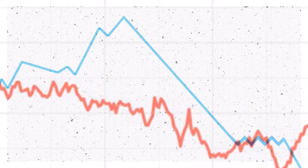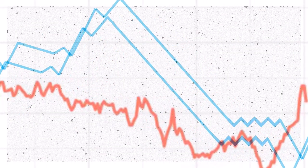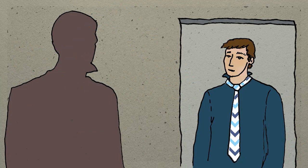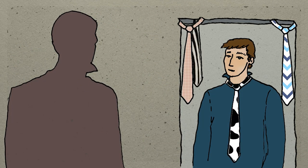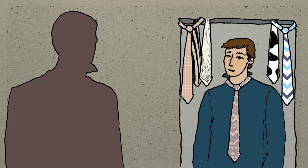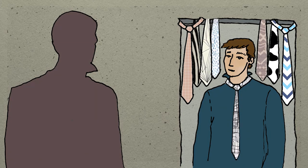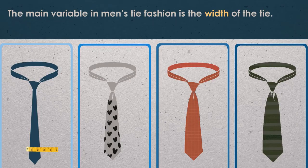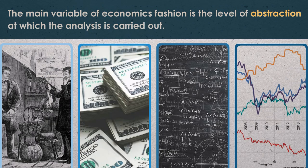To an outsider this may sound strange, but the science of economics behaves like fashion — it changes in cycles. As a man who has had to wear ties professionally, I observed that if I just stored my unfashionable ties long enough, they would sooner or later become fashionable again. The main variable in men's tie fashion is the width of the tie. The main variable of economic fashion is the level of abstraction at which the analysis is carried out.